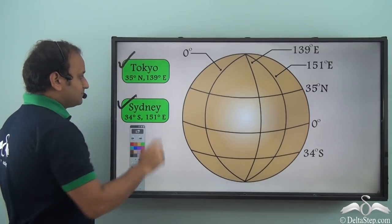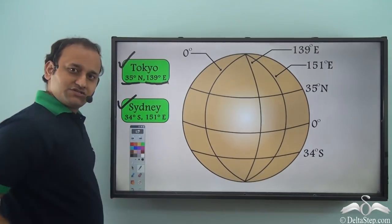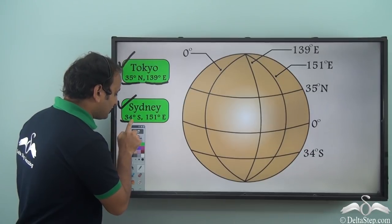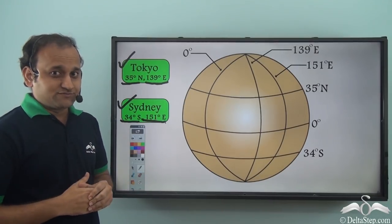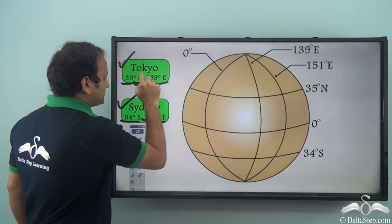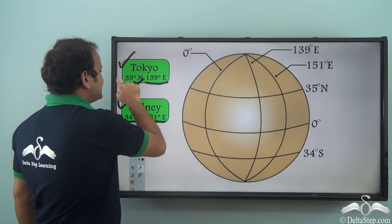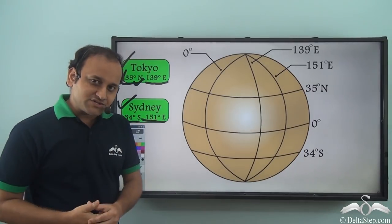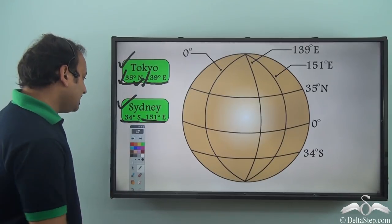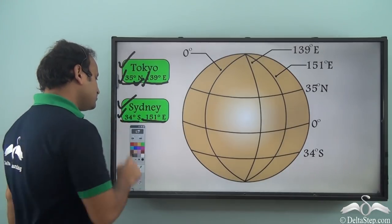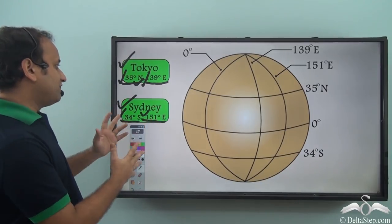We have here Tokyo and Sydney. Tokyo's coordinates are 35 degrees north and 139 degrees east. Sydney has a latitude of 34 degrees south and 151 degrees east. Now, which one is latitude and which is longitude? The 35 degrees north is a latitude because latitudes are measured north or south of the equator. The 139 degrees east is a longitude because longitudes are measured east or west of the prime meridian. Similarly, 34 degrees south is a latitude and 151 degrees east is a longitude.